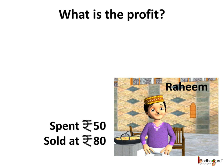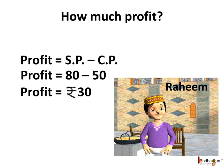On the other hand, Rahim spends rupees 50 to get bread, vegetables, etc., and sells the sandwich made out of it for rupees 80. SP is rupees 80 and CP is rupees 50, the amount spent in getting the sandwich ready. So Rahim makes a profit equal to 80 minus 50, which is rupees 30. Rahim made a profit of rupees 30 per sandwich.